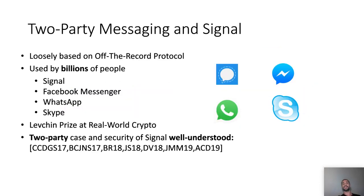In the two-party setting, for messaging we have the success story of the Signal protocol, which is loosely based on the off-the-record protocol. It is used by billions of people and by many applications like Signal, Facebook Messenger, WhatsApp and Skype. It won the 11th prize at Real-World Crypto, and its security is very well studied and understood.